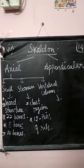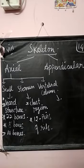Good morning children. Today we move on to see the next skeleton. In the last class, we studied about the skeleton system — that a skeleton is of two types: exoskeleton and endoskeleton. We also saw the functions of the skeleton in the last class.